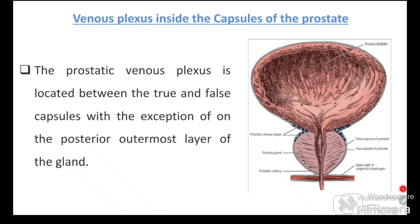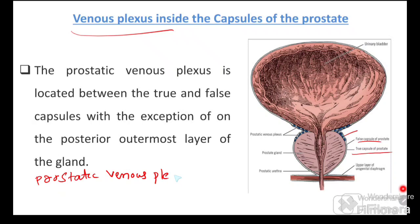Between the true and false capsule lies the prostatic venous plexus. The urinary bladder has its own vesical venous plexus, and both the prostate and urinary bladder share a common false capsule. The prostatic venous plexus is located between the true and false capsule.